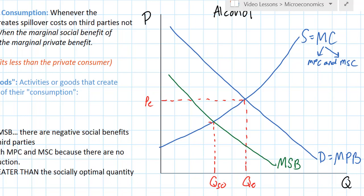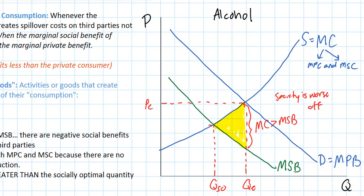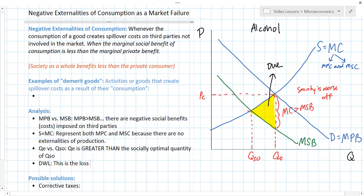How do we illustrate the deadweight loss, or the loss of welfare, arising from alcohol consumption? Looking at our equilibrium quantity, we can see that at that quantity the marginal cost imposed on society from alcohol consumption is greater than the marginal social benefit. Society is worse off because of the overconsumption of alcohol. There is a loss of total welfare represented by the triangle below the marginal social cost curve and above the marginal social benefit curve, between the socially optimal quantity and the free market equilibrium quantity. This yellow-shaded triangle represents the deadweight loss resulting from the overconsumption of alcohol.